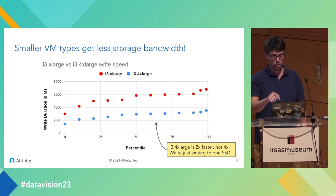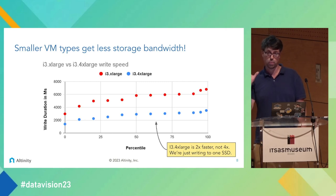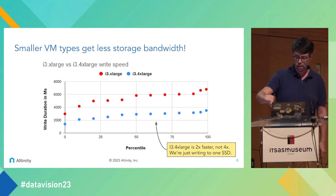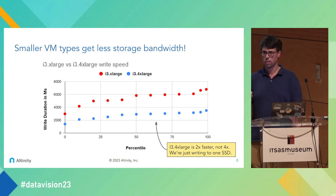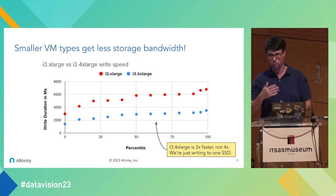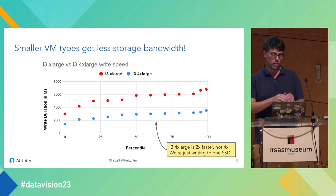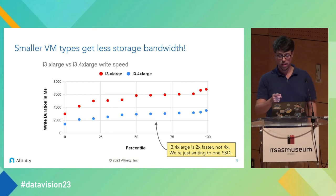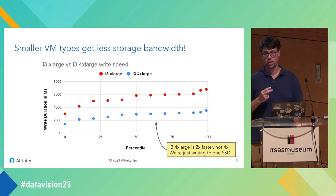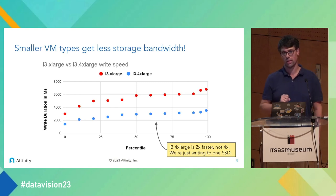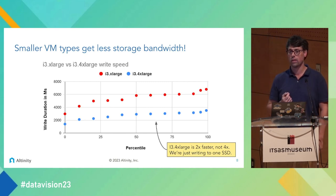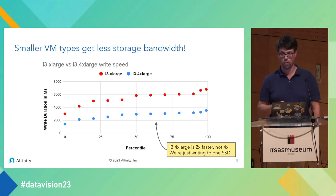We tested an i3 xlarge versus an i3 4xlarge — four times the CPU and four times the memory — and bandwidth was only two times, not four times. When you look at the instance specs, the i3 has only one disk and the i3 4xlarge has two disks. This is the key: you have to read what the cloud vendor is actually offering. If you want to test IO bandwidth, be aware it won't be 4x — it'll be 2x. That's one interesting finding.